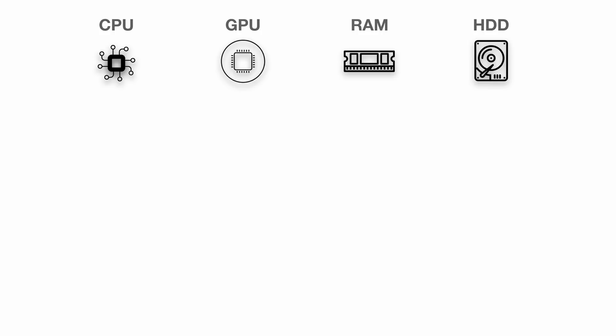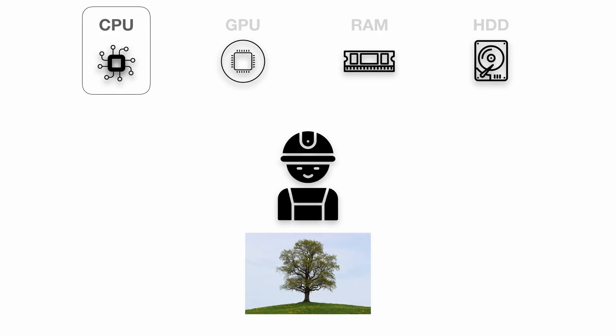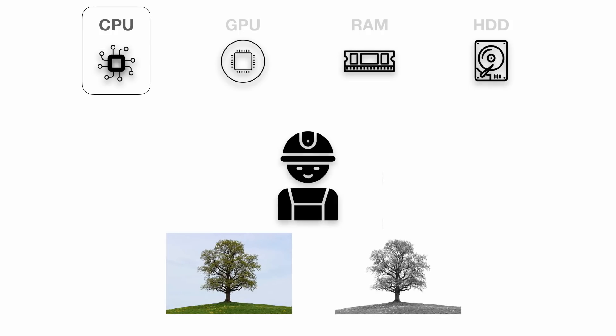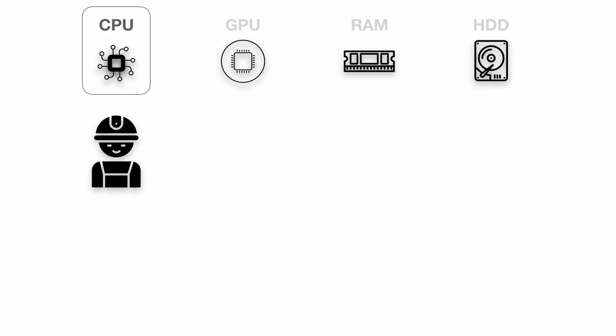First, let's take a look at the CPU. You can think of the CPU as a worker — someone who does the job you ask them for. For example, if you get an image and you ask the computer to turn the image into a black and white image, this is a job for the CPU. So the CPU will process the image; it does the work you asked it for.